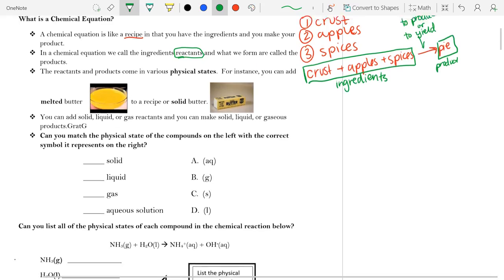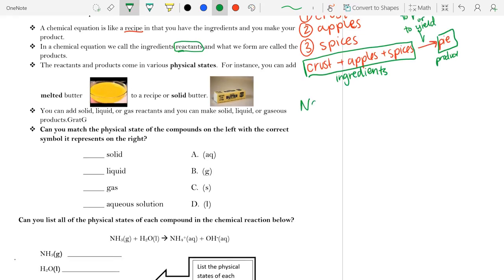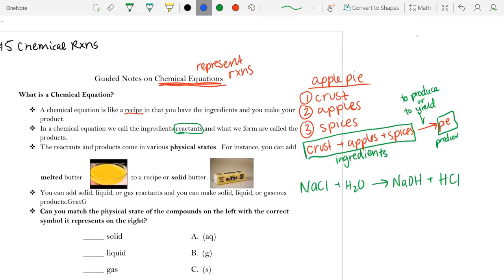Now, with this, if our ingredients are on the left side of our arrow, then we know the ingredients for this reaction are our reactants. It's on the left side.